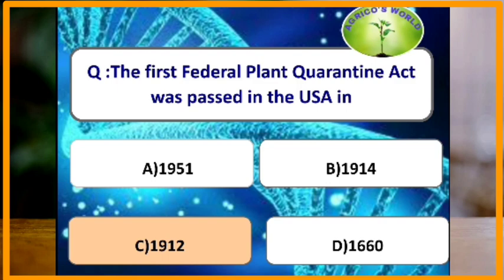The first Federal Plant Quarantine Act was passed in the USA in which year? The Federal Plant Quarantine Act was passed in the year 1912.